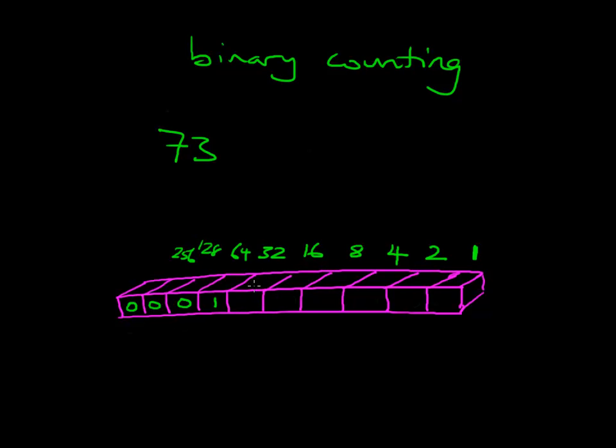Inside the 32s column, well, if we take 73 and we take away the 64 from it, we're going to get 9. So we don't need any 32s, we don't need any 16s. But we do need an 8. 8 does go into 9, so we'll take an 8.